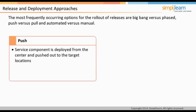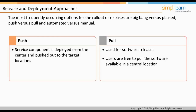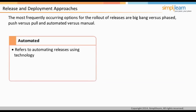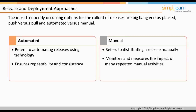The push approach deploys a service component from the center and pushes it out to target locations — for example, pushing anti-virus software upgrades to connected PCs from the server. The pull approach is used for software releases where software is made available in a central location and users are free to pull it to their own location when required — for example, informing employees to pull software from the server when needed. The automated approach uses technology to automate releases, ensuring consistency, though the time required may not always be viable — for example, common live updates from vendors. The manual approach distributes releases manually and is likely to be inefficient and error-prone — for example, installing required Microsoft Office upgrades manually.